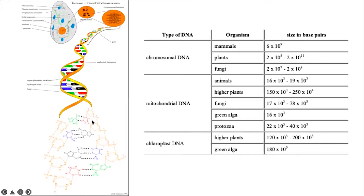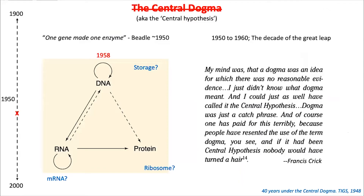DNA is pretty much always in a double-stranded form. Now, why do we believe that protein synthesis doesn't directly come from DNA — why is it not feasible? In 1958 these were proposals, completely hypothetical models.